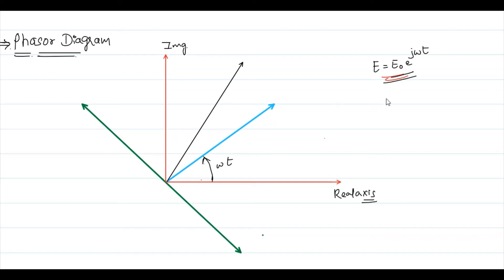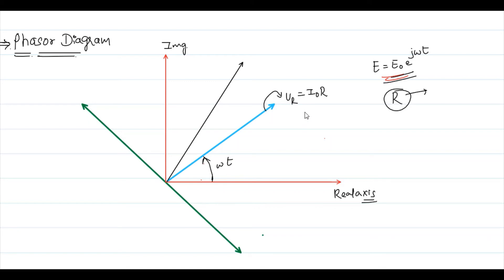There is no phase difference between current and voltage across a resistor. Therefore, the resistance axis also represents both V_R = I₀R and the current I₀. This axis shows that current and voltage are in phase in the purely resistive component.